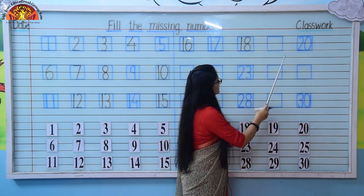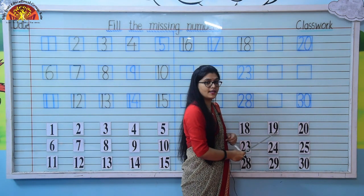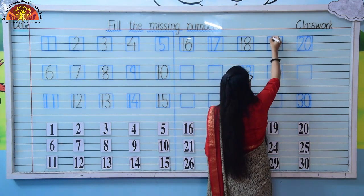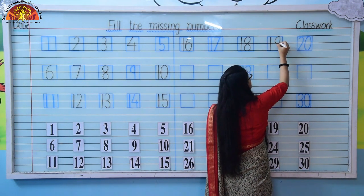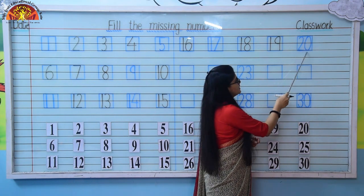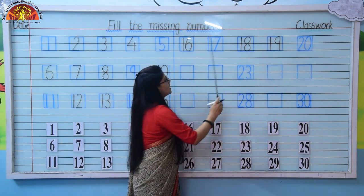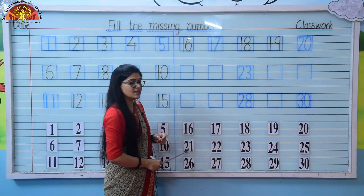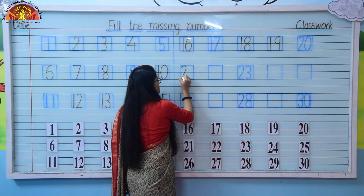Again, one number is missing here. So which number comes after 18? It's 19: 1, 9, 19. So here we will write number 19. And after that, number 20 — it's already written. So tell me kids, which number comes after 20? It's 21. So here we will write number 21. 21, 21.